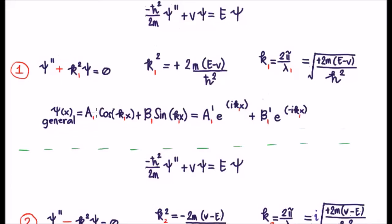The general solution to this is a linear combination of cosines and sines. So we have A₁ cos(k₁x) plus B₁ sin(k₁x), which can be equivalently written as complex exponential functions if we use Euler's equation.